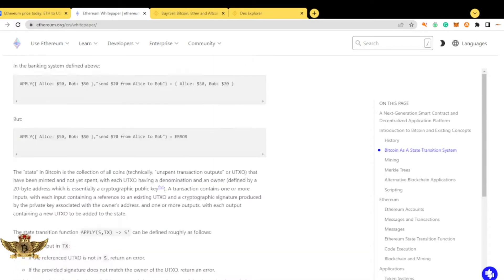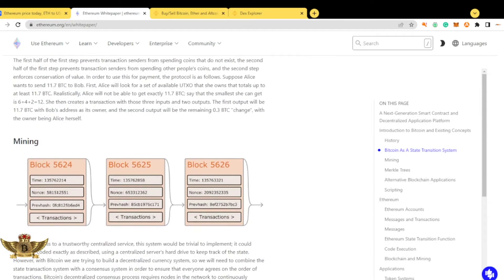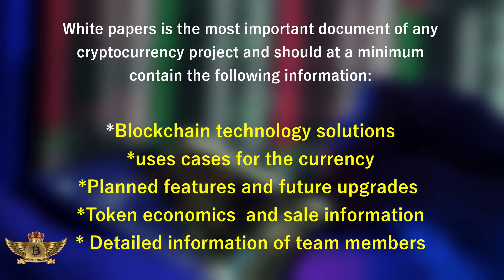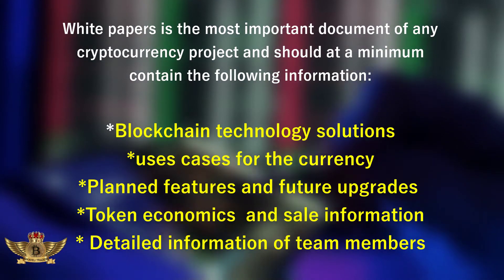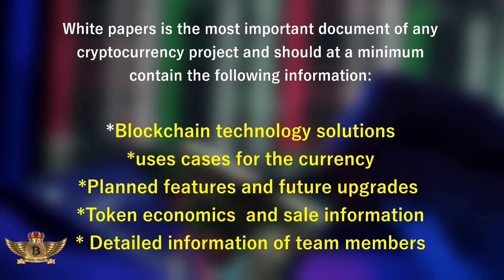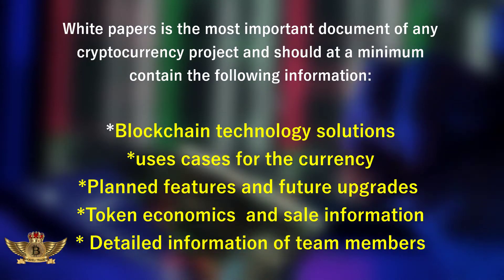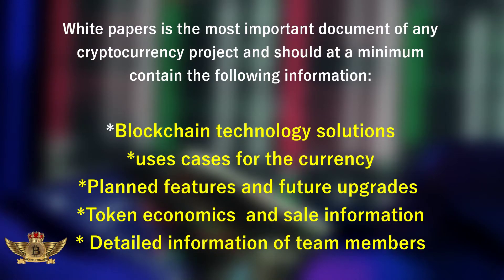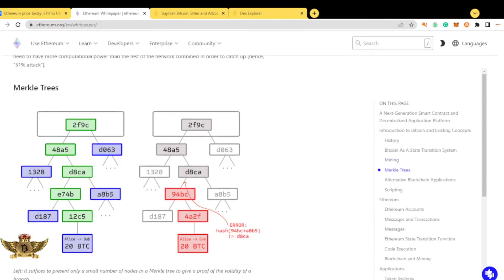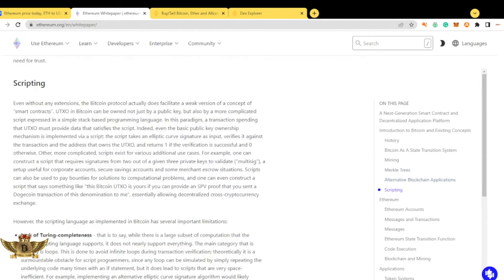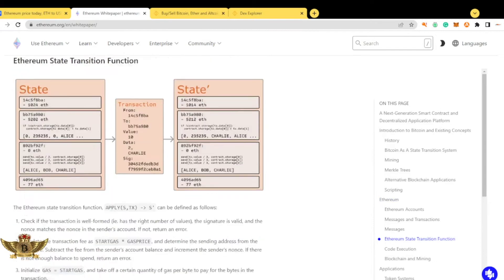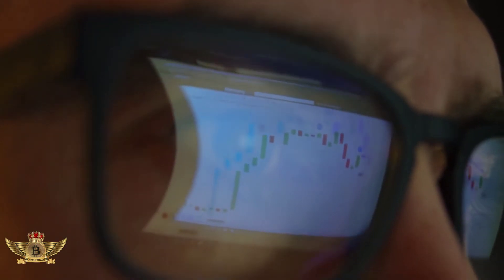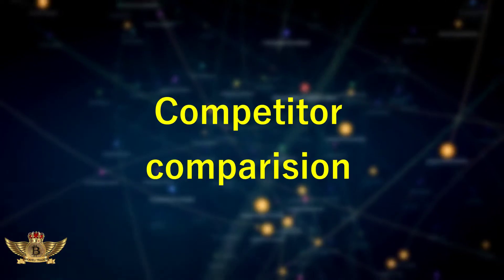The white paper is a document that outlines the purpose and operation of the project. It is the most important document of any cryptocurrency project and should be studied carefully. It should contain at minimum: the blockchain technology solution to be used, the use case of the cryptocurrency, planned future upgrades, token economics and sales information, and detailed information about team members. Studying a cryptocurrency white paper requires some skepticism, and looking at third-party reviews about the project online can also be helpful.